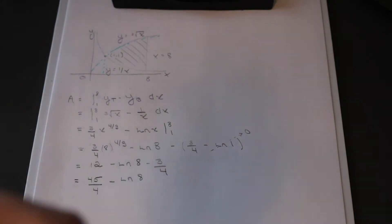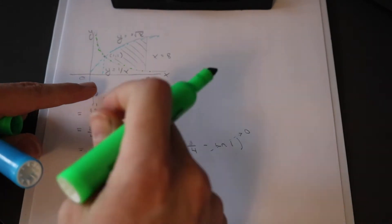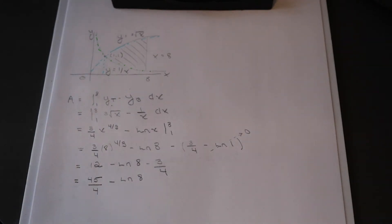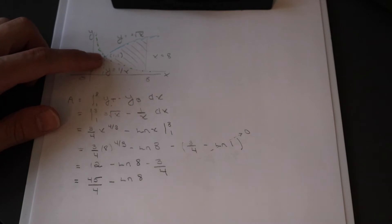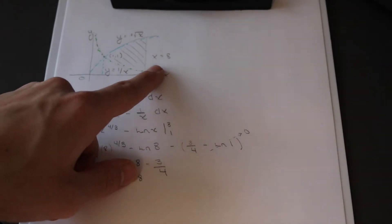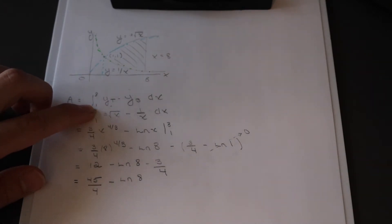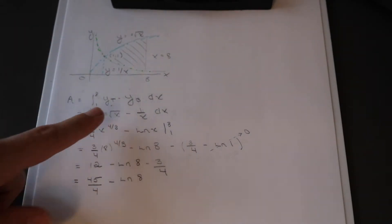Looking at the bottom curve, we're considering where it crosses below and calculating the area below those bounds. To calculate the area between the curves, we set up an integration where our bounds are in x. In this case the curves intersect at x = 1, so our lower bound is 1, and the given outside limit is x = 8, which is our upper bound. Then we integrate y-top minus y-bottom, which gives us the area between.